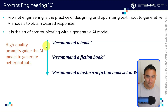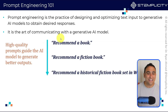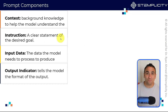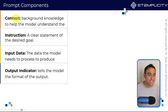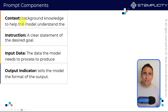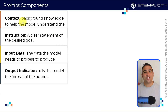To design any prompt, there are four different components. The first one is what we call context — think of it as the background knowledge to help the model understand who you are and what you're looking for.